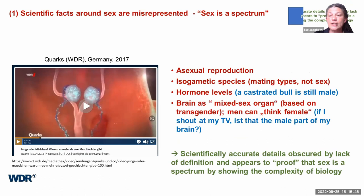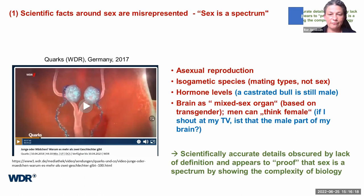Other examples: they talk about asexual reproduction, which has nothing to do with sex — as 'asexual' implies. They talk about isogametic species, which have mating types, not sex. They talk about hormone levels, which made me laugh, because a castrated bull is still male. They also claim that the brain is a mixed-sex organ based on transgender individuals, and that men can therefore think female — which made me wonder whether it was the male part of my brain making me angry at the TV.